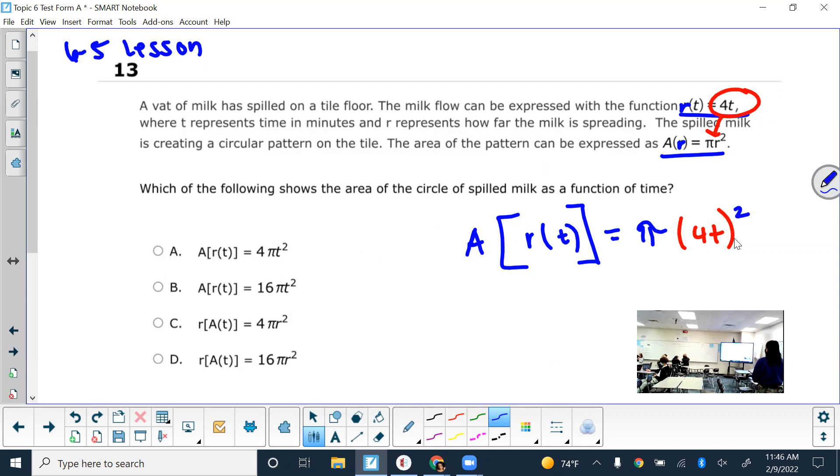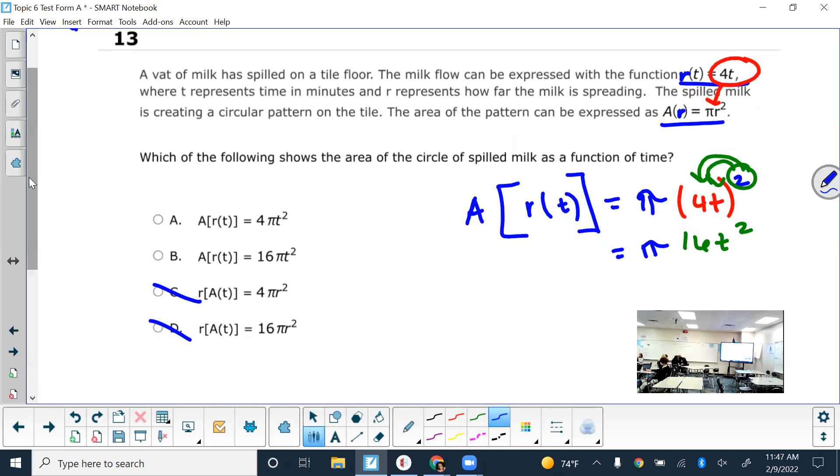So any confusion so far? So just from the symbols we can cancel out C and D because it should be R plugged into the A function. And then over here, it kind of looks like the answer might be A, but it's not. And here's why. They used the power rule and distributed that exponent of 2 to everything inside. So what's 4 squared? 16. And then we distribute the 2 to the t, so I get t². Bring down everything else. And normally when we have numbers in our formulas, those are our coefficients. So they just rewrote it as 16πt². That's why the answer is B.